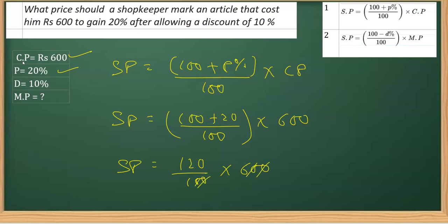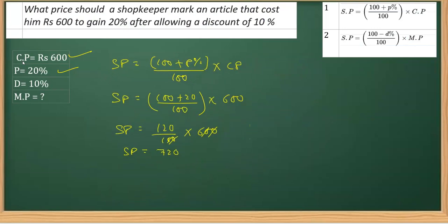So we got SP is equal to 120 over 100 multiplied by 600. These zeros get canceled and this is 12 into 6 is 72 followed by 10. So we got the selling price as rupees 720. Once we get the selling price in this case, now next thing that we need to do is to find the mark price.